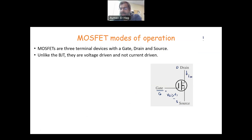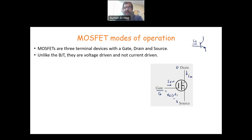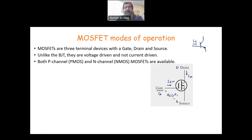In the BJT, if you remember, it's current-driven, so it is based on IB. IB is the one responsible to bias the transistor. Here it's the voltage, and the current IG is basically equal to zero. So the power consumption of the transistor is much less than the BJT, which gave it an advantage. Now, there are two different types: the P-channel and the N-channel, as we have in the BJT the NPN and PNP.